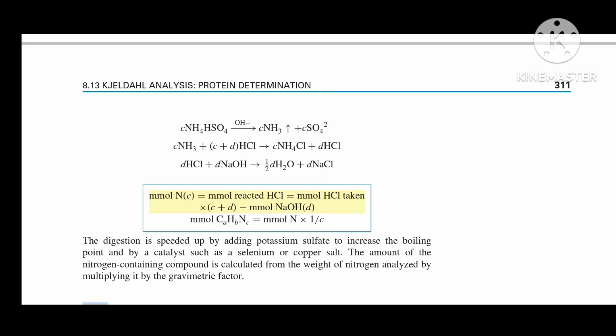Millimoles of nitrogen (c) equals millimoles of reacted HCl, which equals millimoles HCl taken (c + d) minus millimoles NaOH (d). Therefore, millimoles of CaHbNcO equals millimoles N times 1/c.